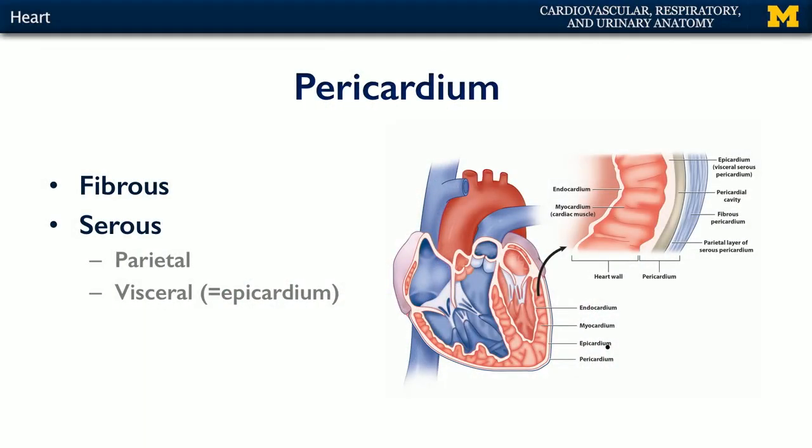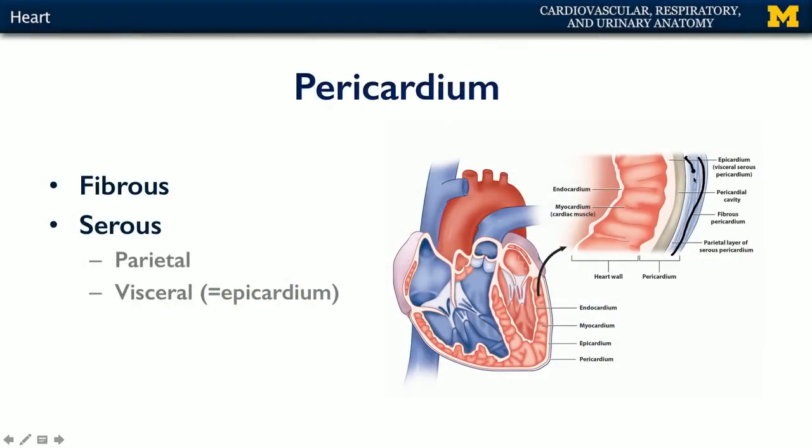The heart is surrounded by the pericardium — a protective bag that creates a safe space called the pericardial cavity in which the heart may function. There are two parts to the pericardium: the fibrous pericardium, the outermost layer, which is rather rigid and inflexible, and deep to that, the serous pericardium, which comes in two layers — the outer parietal layer and the inner visceral layer — with the pericardial cavity separating the two.